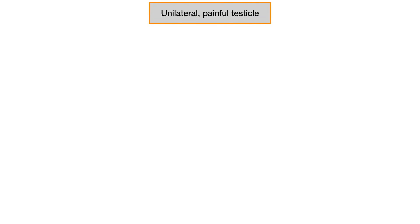The way you're going to figure out if this is torsion or epididymitis is to ask yourself what's happening with the Prehn's sign and what's happening with the cremaster reflex. The most important thing here is probably going to be the Prehn's sign.